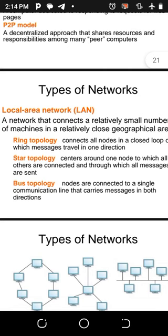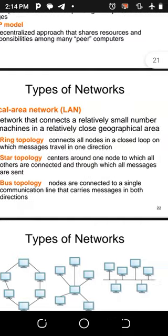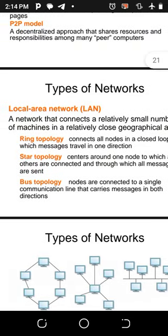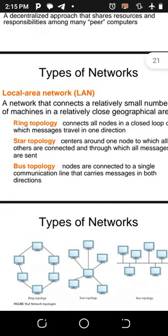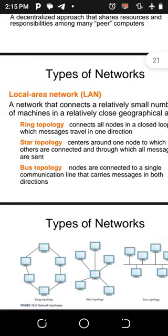Types of computer networking: we have LAN, which stands for Local Area Network. A LAN is a network that connects a relatively small number of machines in a relatively close geographical area.